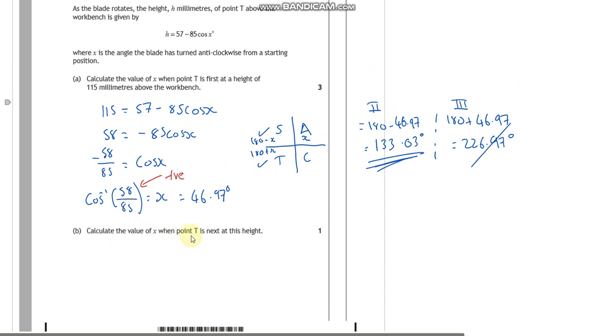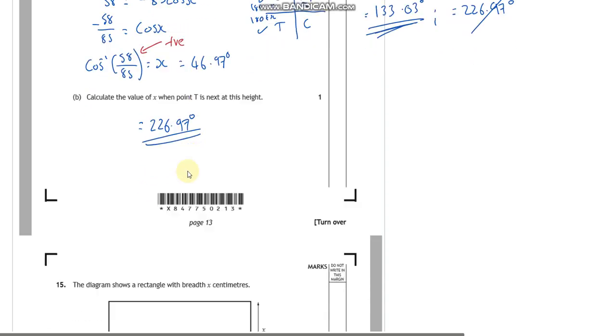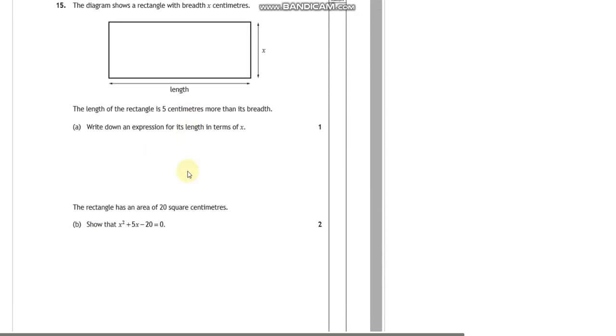And calculate the value of x when the point T is next at this height. We've already done that. So we just see that that is at 226.97 degrees. Fantastic. So that's quite nice, isn't it? That we're giving you that for free, really. So four marks for that. I think it's quite nice, personally. But I can see why people aren't a big fan. And if you're getting to the point where you're studying and you think I'm not liking everything, maybe that's a topic you might want to leave out. There's things that you might want to concentrate on.